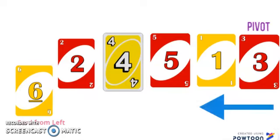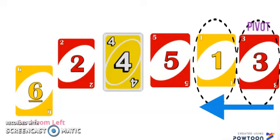Next, I'm going to start from the right and find the first card that is less than the pivot. As I can see, one is less than three, so I found the card from the right.